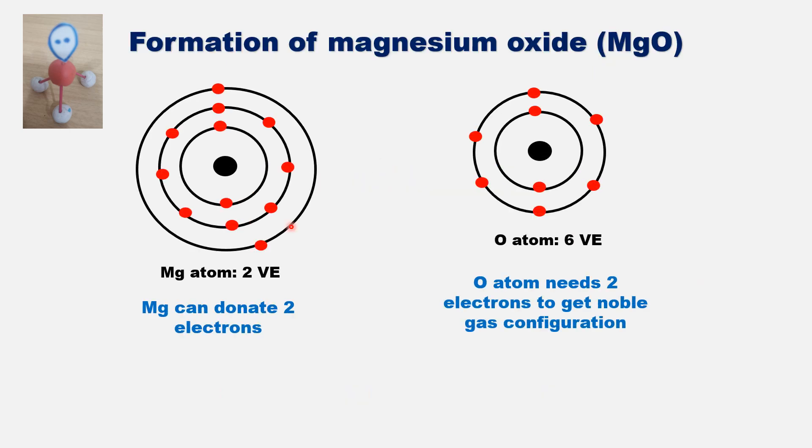These are the orbital diagrams of magnesium atom and oxygen atom. Magnesium atom has two valence electrons. Oxygen atom has six valence electrons.